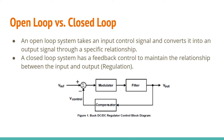Closing the loop allows us to regulate the output voltage. We can do this by using a reference voltage and error amplifier. The combination of the pulse generator, output filter, and error amplifier is what makes a complete DC to DC converter.